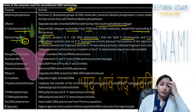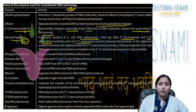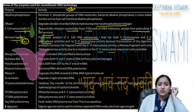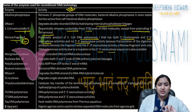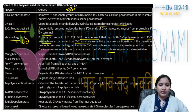A modified Klenow fragment with only DNA polymerase activity is obtained due to a mutation in the 3'→5' exonuclease domain. S1 nuclease is a single-stranded DNA and RNA endonuclease — basically it can cut single-stranded nucleic acids.